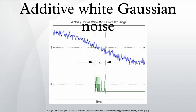Gaussian because it has a normal distribution in the time domain with an average time domain value of zero.